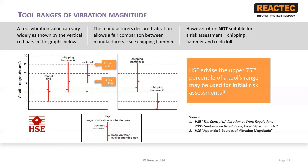In the graphic the HSE have illustrated with a mark on the left the manufacturer's declared value and a mark on the right the mean of all their measurements. For the chipping hammer it ranges from 10 to 26 meters per second squared — the manufacturer declared about 11, while the HSE measured a mean value of about 16. For the impact drill, the manufacturer's value is near the middle of the range; for the chipping hammer it is at the lower end; and for the rock drill it is actually lower than any of the measurements taken by the HSE labs.